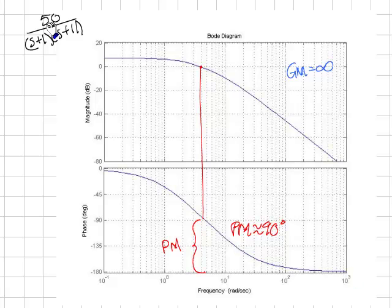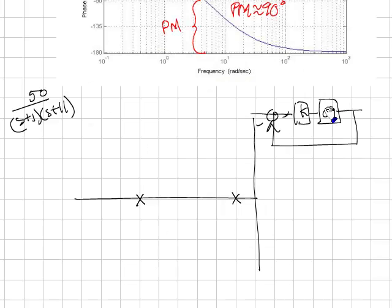This should make sense if we look at the root locus for this system. We have the plant and we're doing it in unity feedback with the gain of K. So the root locus, the two poles, minus 1, minus 11, come together in the middle, break apart, and go like that. That means that no matter how much we increase the gain, the system never goes unstable.